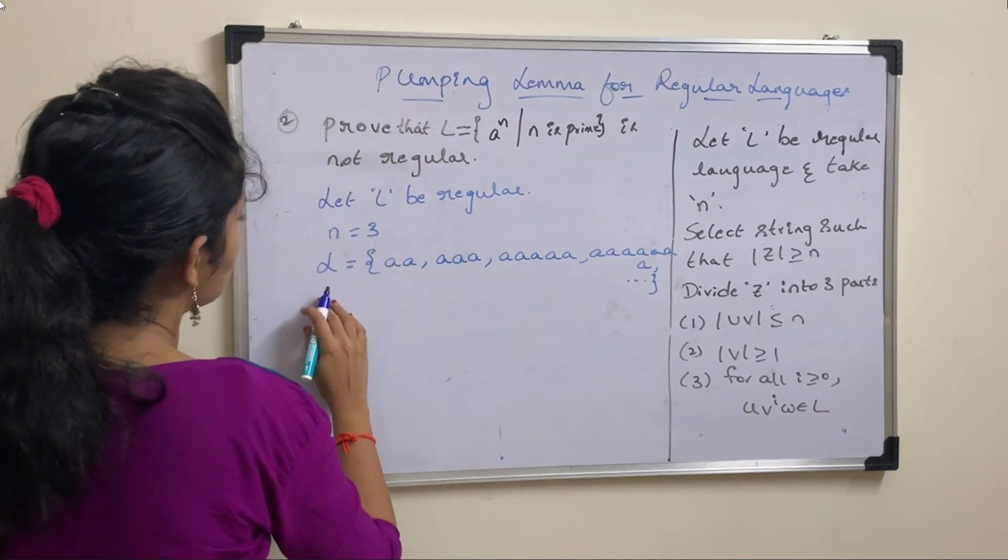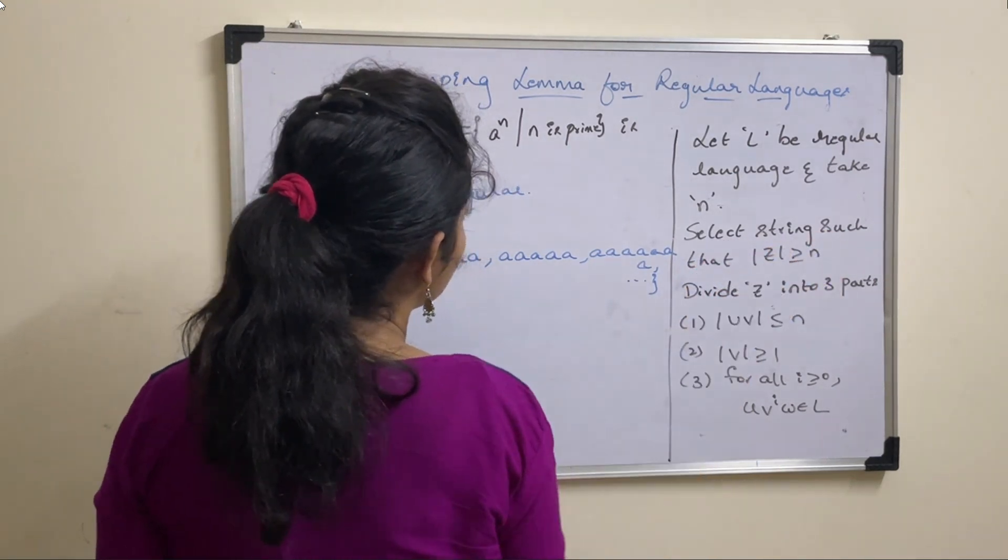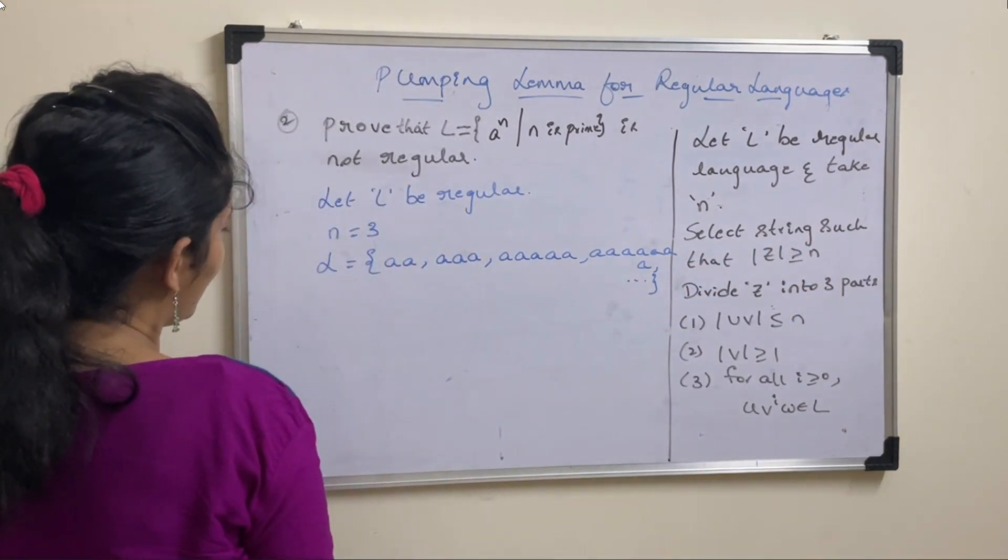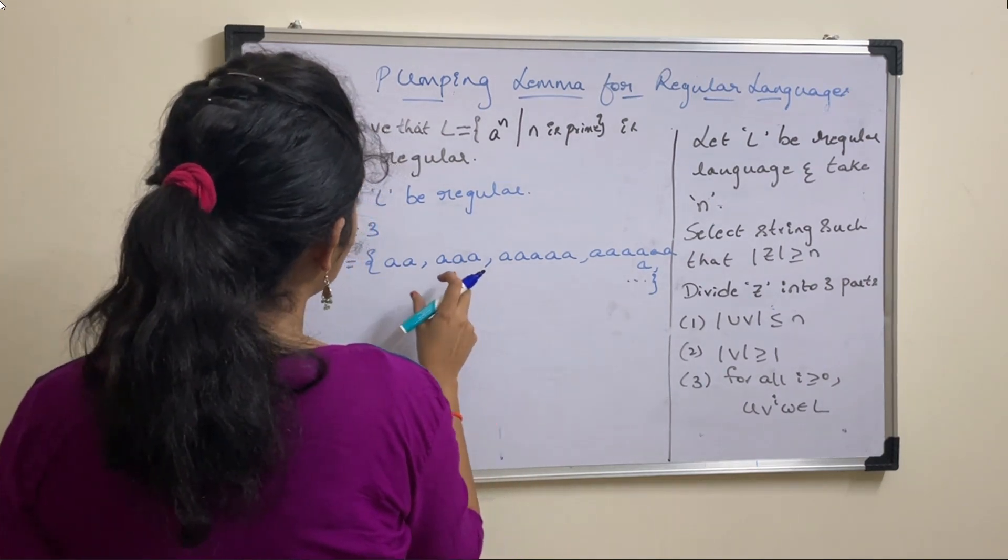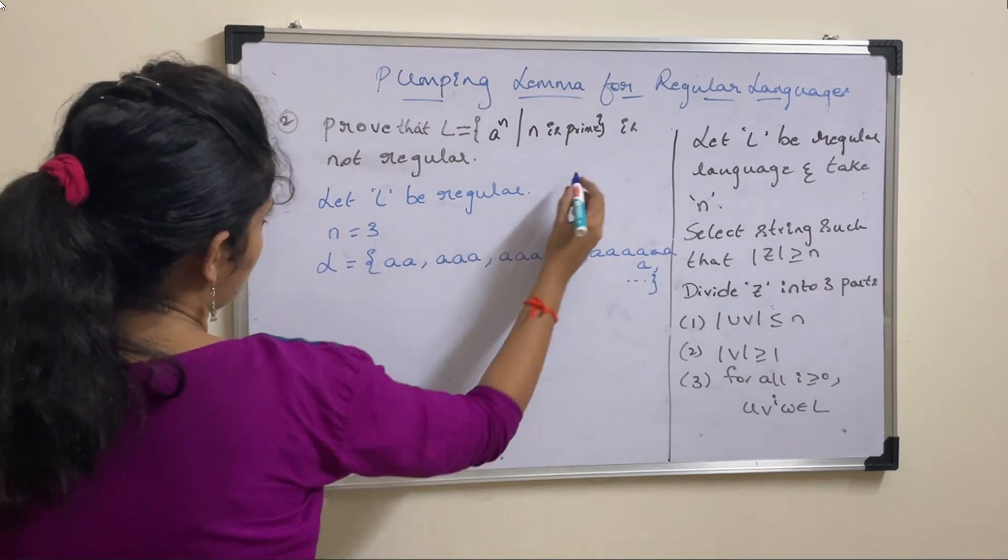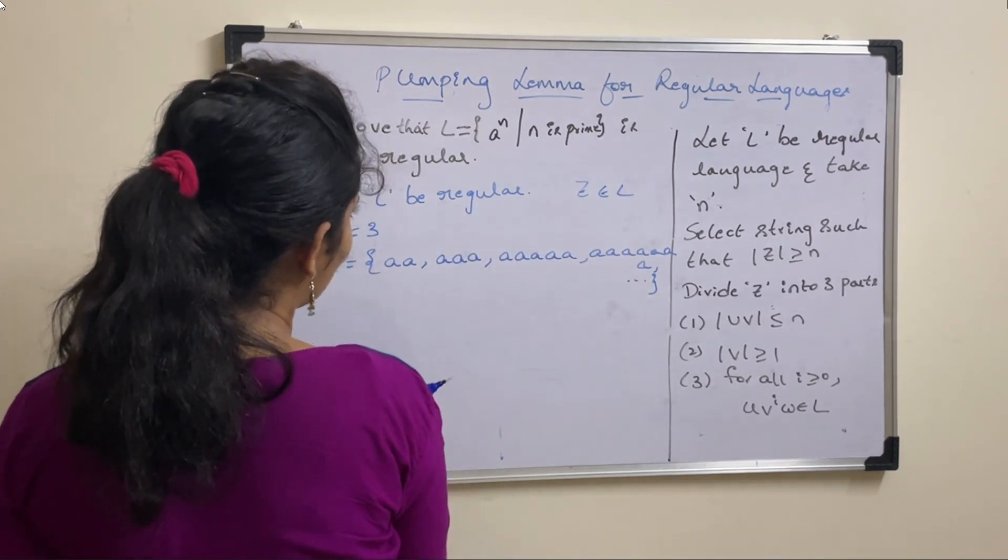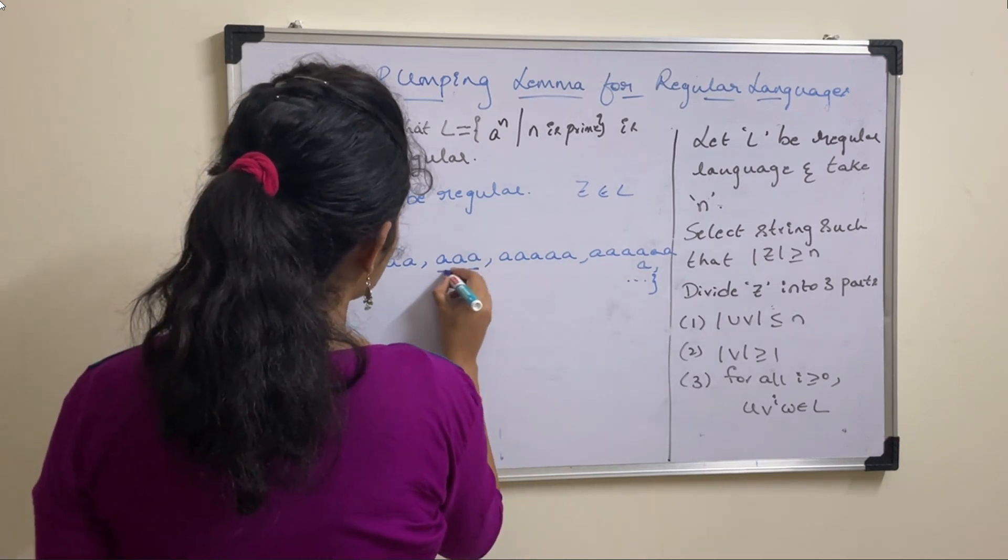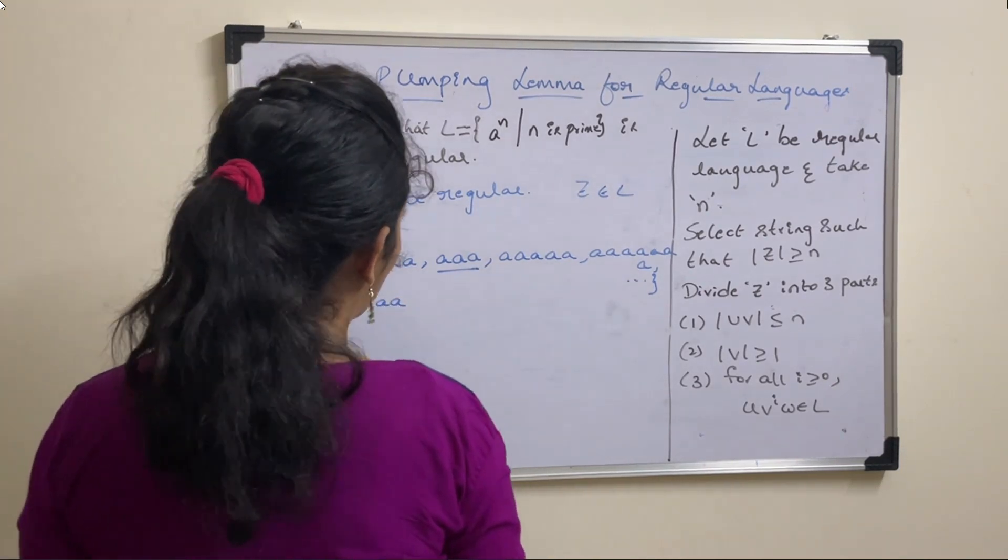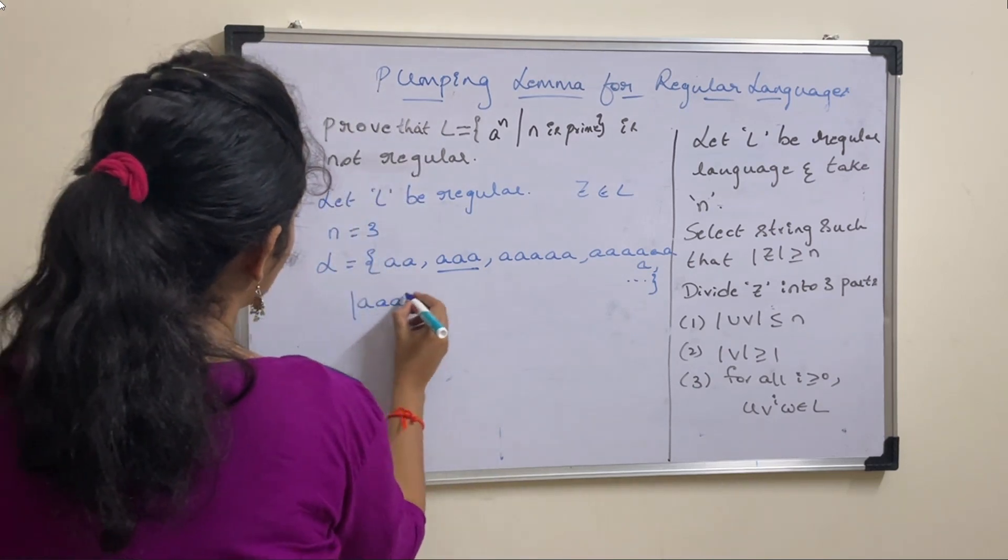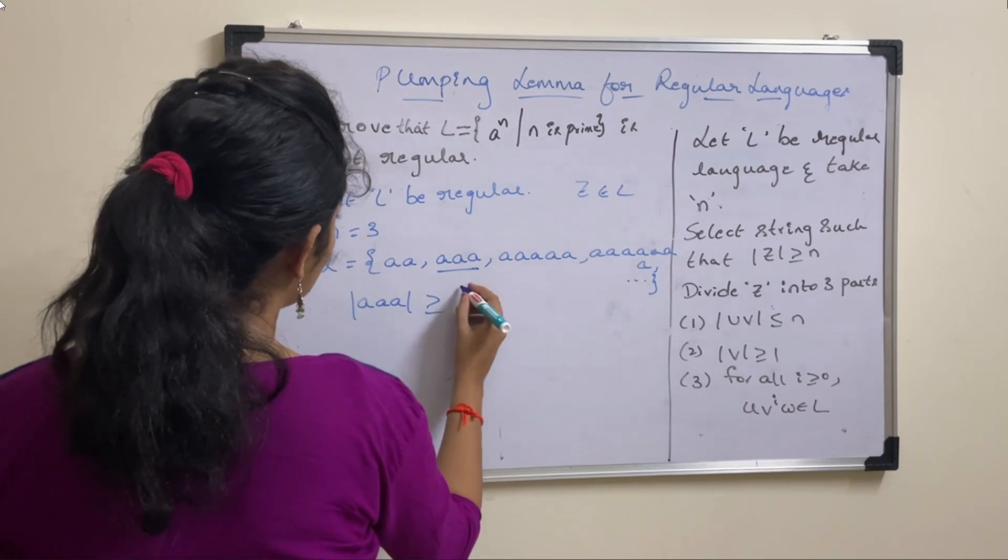After defining this language, select string Z such that mod Z greater than or equal to N. You need to select Z value. Z should belong to this language. Z must be part of this language, so pick one language from this. Let us pick triple A.